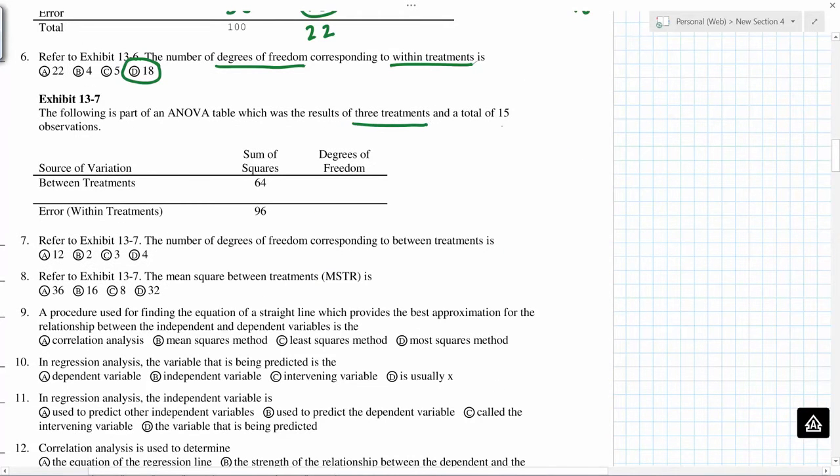Three treatments, total of 15 observations. If you add, this is 160, and because there are three treatments, total of 15, so this is 14 degrees of freedom, and this is 2 degrees of freedom, so 2.